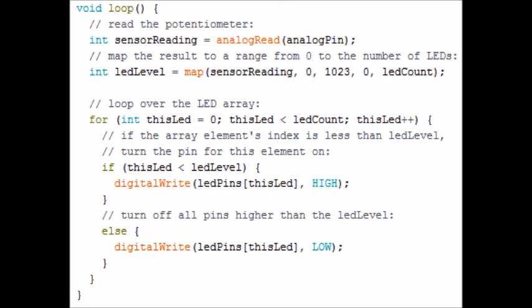And then we need to map the result to a range from 0 to the number of LEDs. So int ledLevel equals map sensorReading 0, 1023, 0, ledCount. So that's what that's going to do. It's just going to map the result to a range from 0 to the number of LEDs.